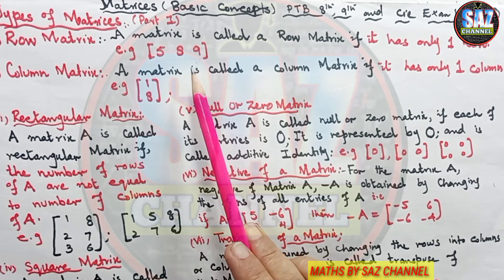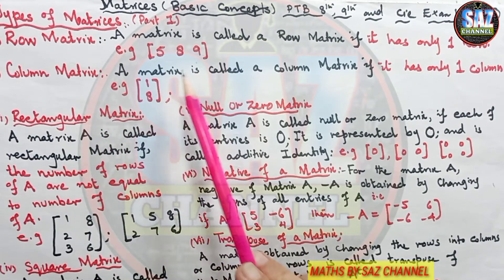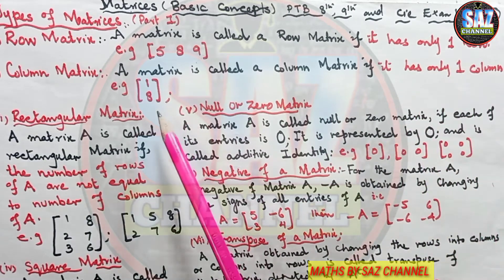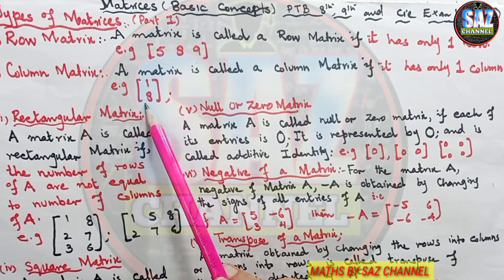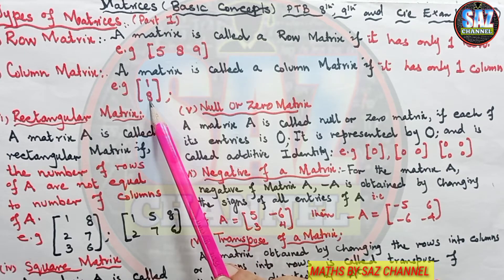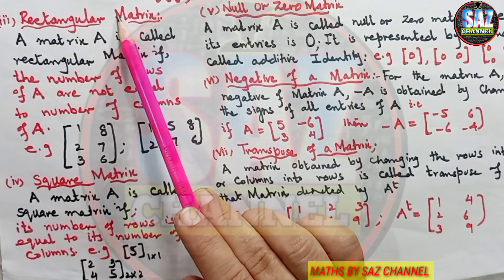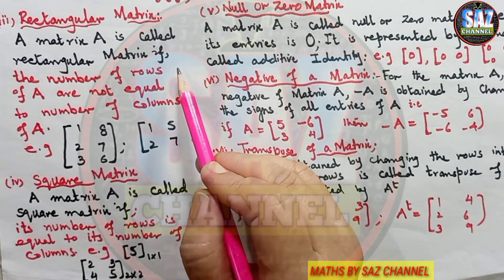Next is the column matrix. A matrix is called the column matrix if it has only one column. For example, 1 and 8 are arranged in vertical form, making one column. So this is a column matrix.